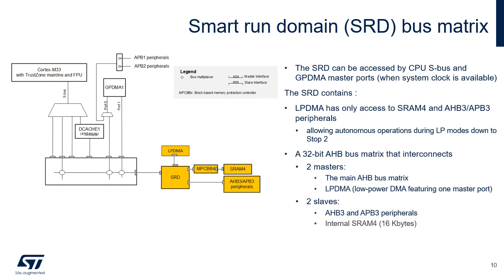The autonomous peripherals mapped on AHB3 or APB3 belong to the smart run domain (SRD) and are autonomous in stop 0, stop 1 and stop 2, with the LPDMA and SRAM4. The LPDMA has access to SRAM4 and AHB3/APB3 peripherals only.